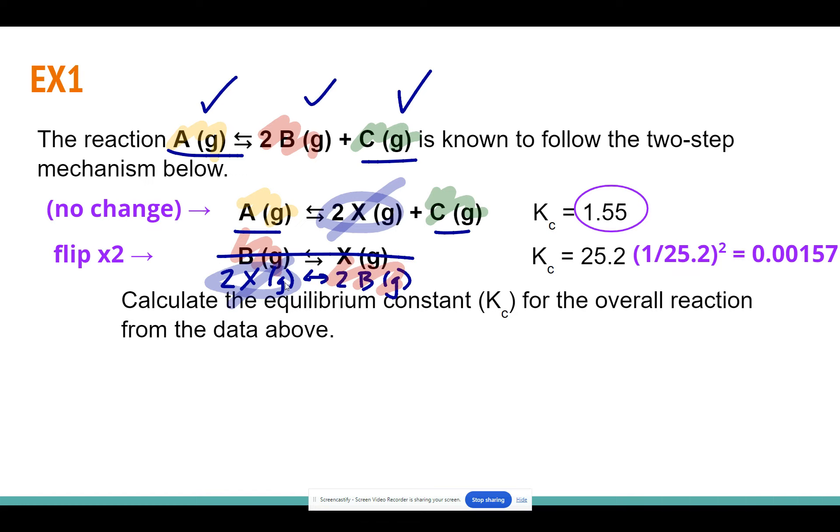So now at this point, we've done what we need to do to these partial reactions. But we still don't have our overall K value until we add up these reactions. When we add up these reactions, that means we're going to be multiplying the K values together. So we take that first step K value that we didn't change at all. Then the second step K value after we've made the changes for flipping and multiplying it by 2, our unrounded answer would be 0.0024335. But because we had 3 sig figs in both of our other K values, we're going to round that to a 3 sig fig answer.